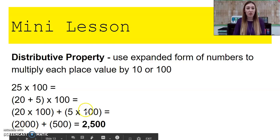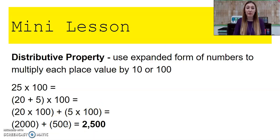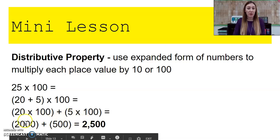So 5 times 100, I can multiply the 5 times the 1, leaving me with 5, and then I have 1, 2 zeros. So 5, plop, 2 zeros on the end for a product of 500. When I add those two products together, my partial products, I get a total product of 2,500.